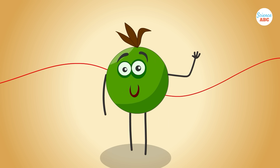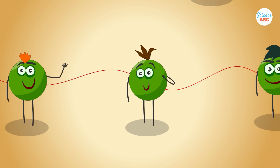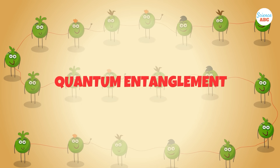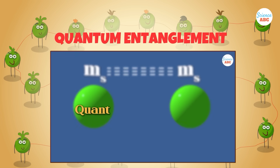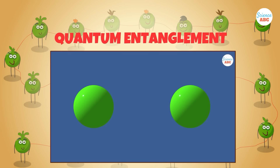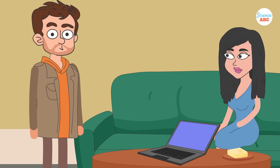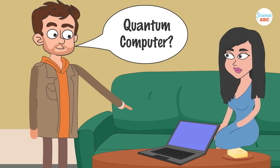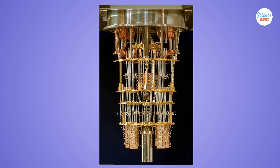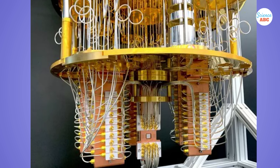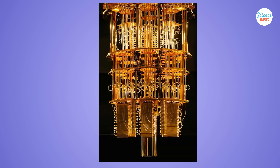Entangled qubits function seamlessly due to a phenomenon called quantum entanglement. We have already made a dedicated video on quantum entanglement, and the link is in the description. Additionally, a quantum computer looks nothing like your regular computer or laptop. When you walk into a room housing a quantum computer, what you'll most likely notice first is large, complex-looking machinery.